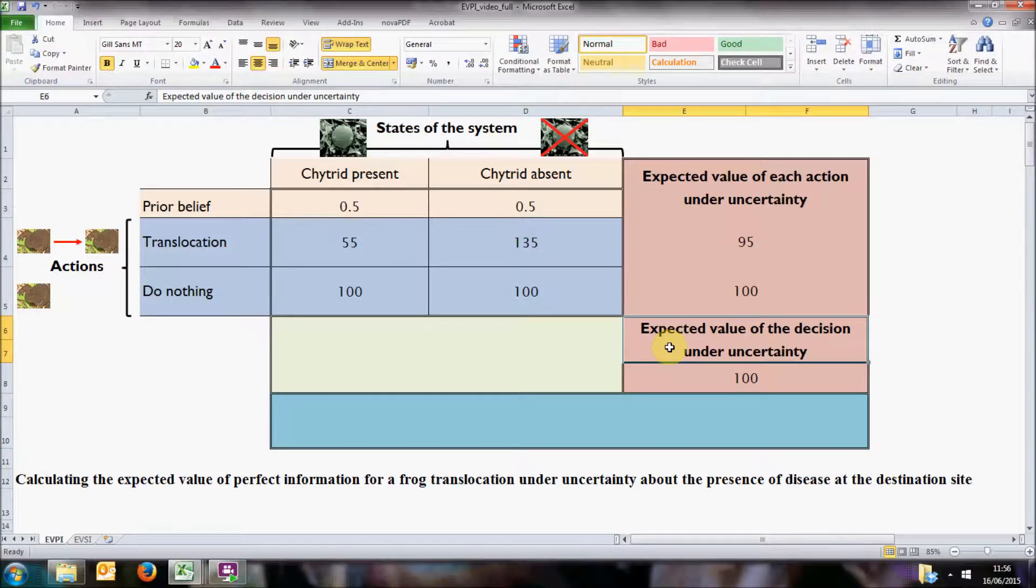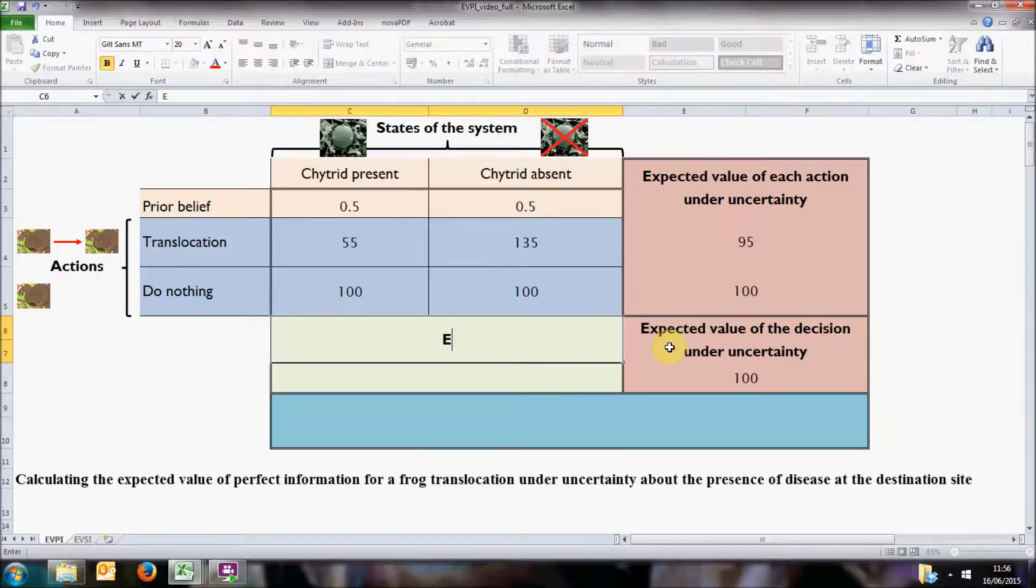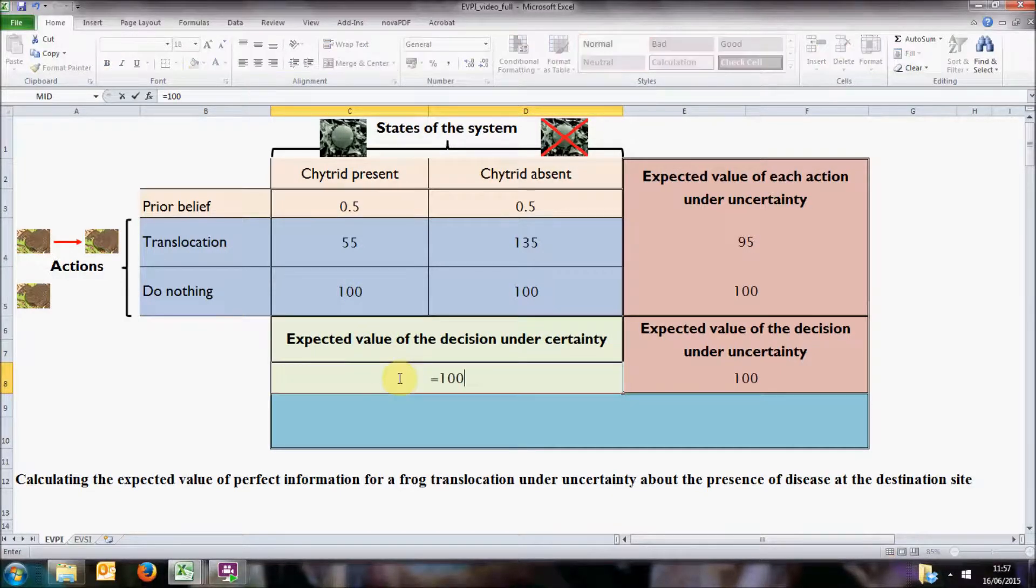Now if we had access to perfect information, we would know exactly what the true state of the system was. In this case, if we knew that chytrid was present, we would choose not to translocate and we would expect to get 100 individuals. However, we don't know yet if that's the case, so we must assume that the probability that perfect information would confirm chytrid presence is equal to our prior belief. In this case, 50%.